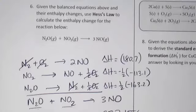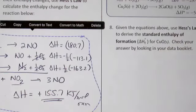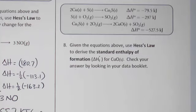Question eight is the same idea we've just done but with a slightly different twist. We have three equations and we want to use them to derive the standard enthalpy of formation for solid copper oxide, CuO. The difference here is that we aren't given the equation — we have to recognize that the formation reaction for CuO is what we need to target: Cu(s) + ½O2(g) → CuO(s), forming one mole of the product.